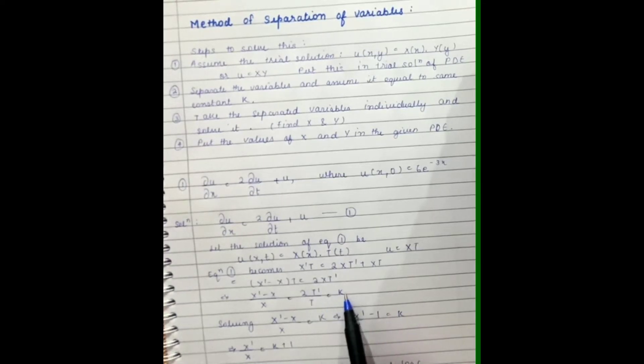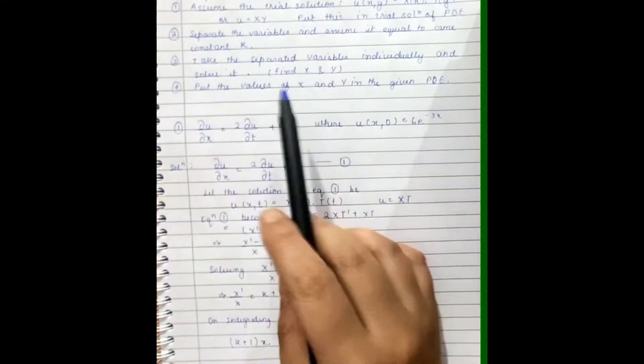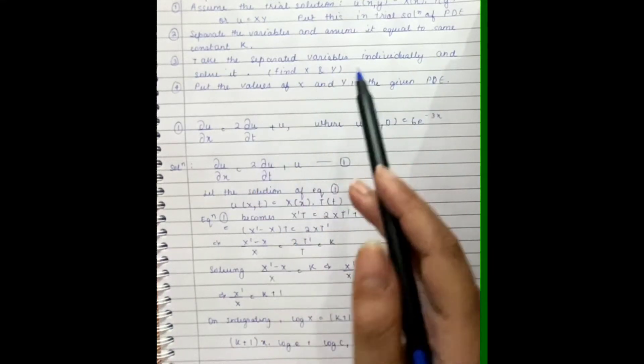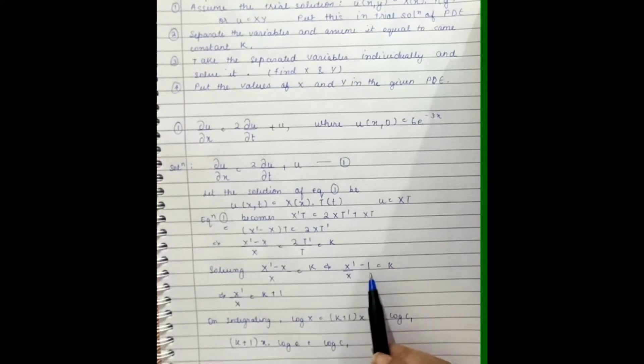In the third step, we have to take the separated values individually and now we have to solve them to find capital X and capital Y. So here we are solving them: X'/X - 1 = k.